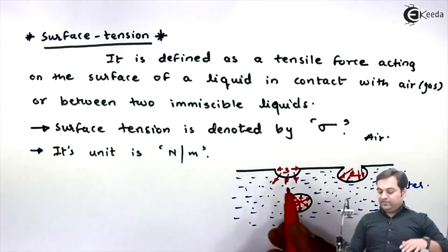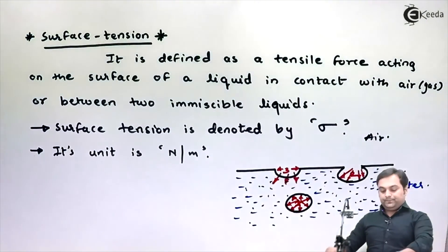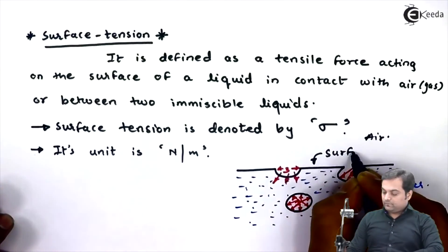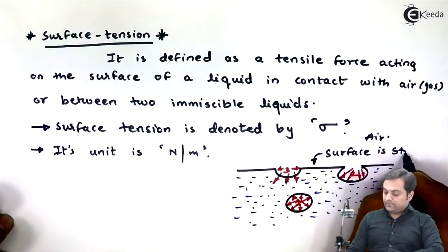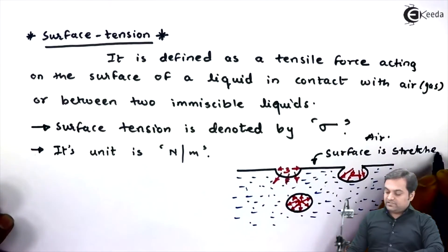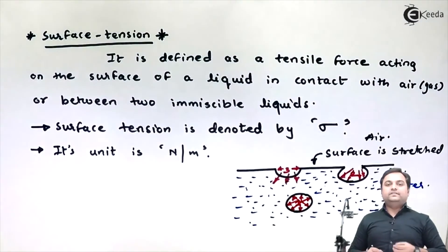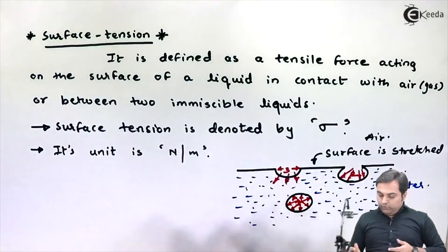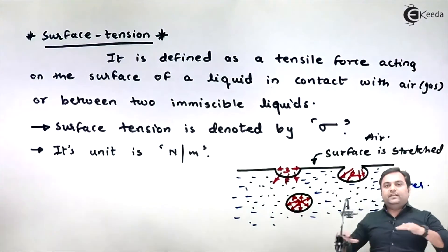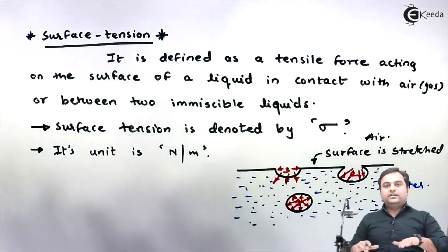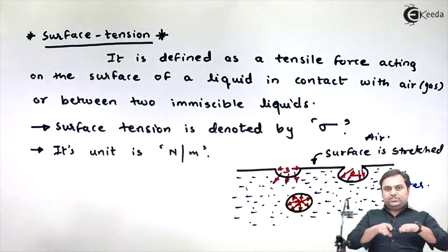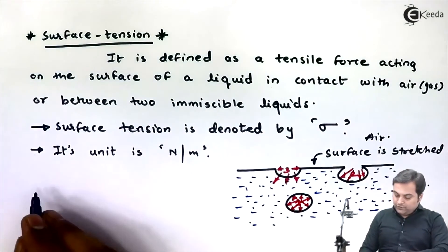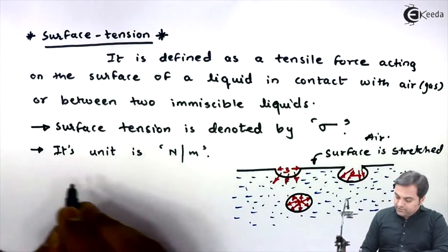Because of this parallel force at the surface for molecule three, the surface appears to be stretched. When the surface is stretched, it means there is some tensile force acting. Surface tension is that tensile force which keeps the surface in a tight position — the surface is not slipping, it is held tight.